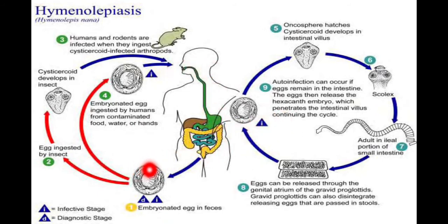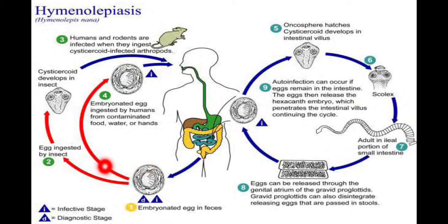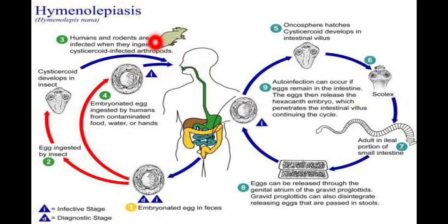This embryonated egg is both the diagnostic stage and the infectious stage — it serves as a diagnostic feature for detecting H. nana infection and also acts as the infectious agent for the uninfected host. In some cases, embryonated eggs can be ingested by insects, and larvae hatch out from these eggs inside the insects; if these insects are then ingested by humans or rodents, it results in infection.